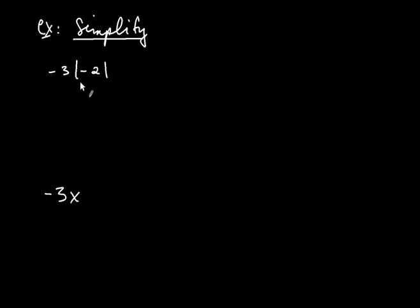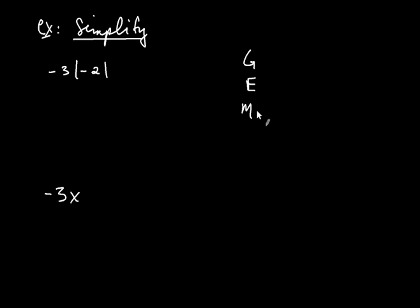There are multiple operations here — there's multiplication, and there's the new operation of taking the absolute value. The answer can be thought of when we consider the acronym for remembering the order of operations. Some people like to say PEMDAS; I like to say GEMDAS. So G, E, M slash D, and A slash S.